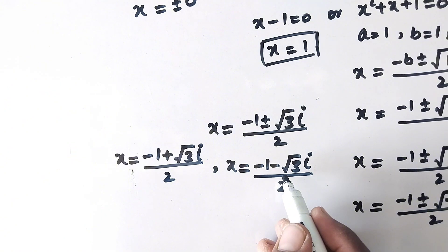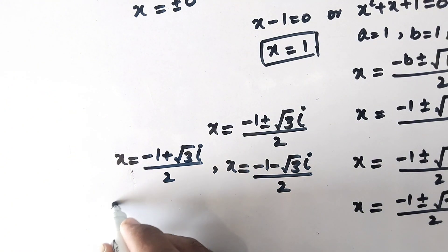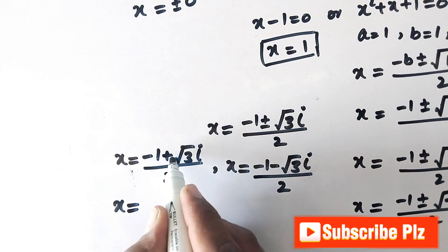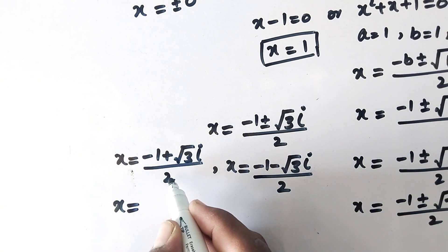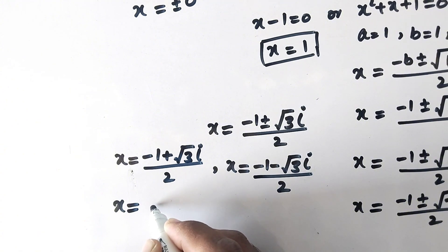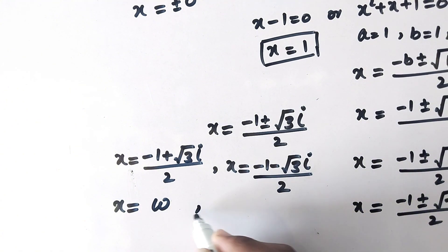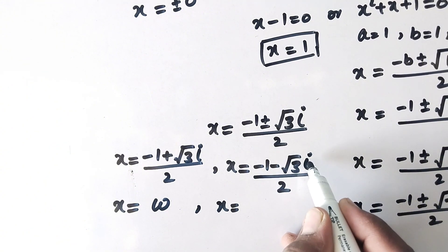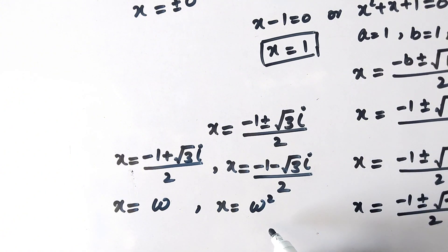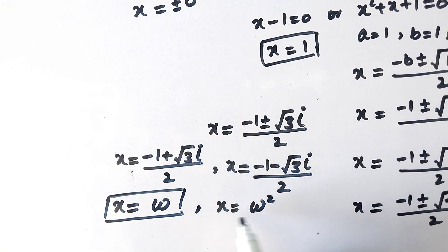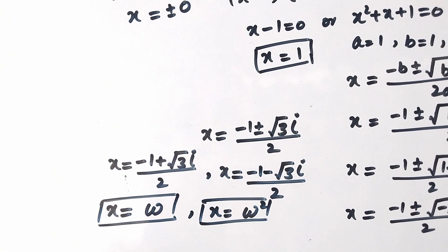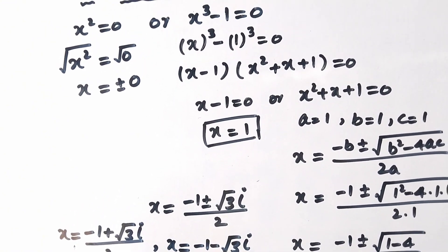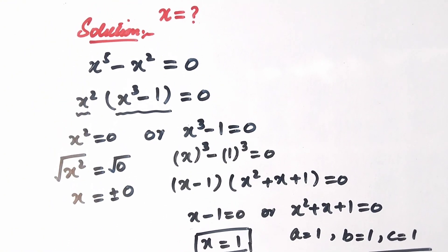These both values of x are imaginary numbers. Minus 1 plus square root of 3 times i over 2 is equal to an imaginary number that we call omega, and minus 1 minus square root of 3 times i over 2 is equal to omega squared. So the values of x we have gotten are omega, omega squared, and 1. I hope you would have liked the video — please subscribe to my channel for more videos. Thanks for watching, take care, bye.